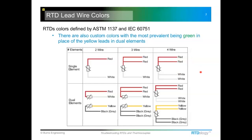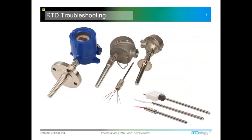One anomaly: the standards call for yellow lead wires in the case of a dual sensing element, but you'll see several manufacturers using green. That started way before either standard existed and just hasn't been changed yet. If you do have questions on RTD construction, please type them into the chat or Q&A — if you've got a question, the likelihood is somebody else has that same question.